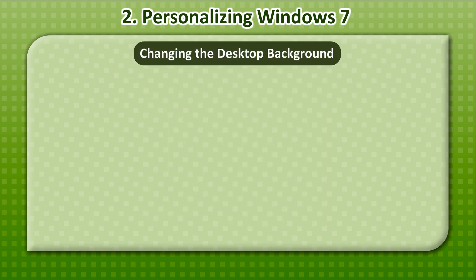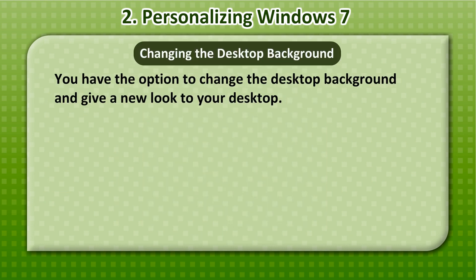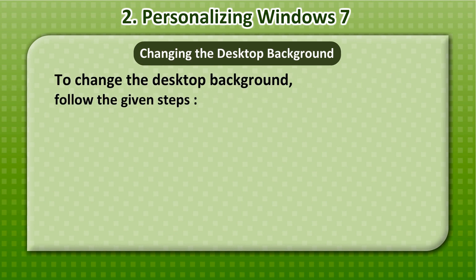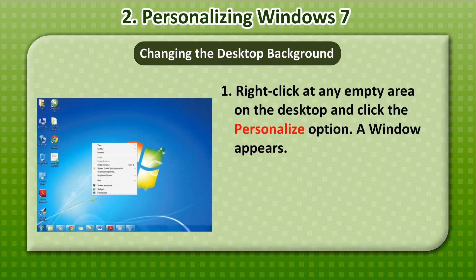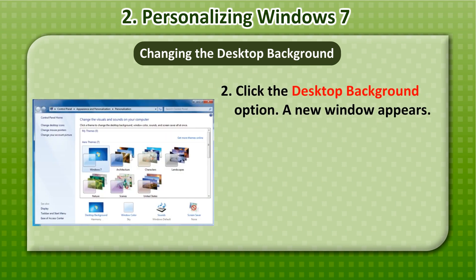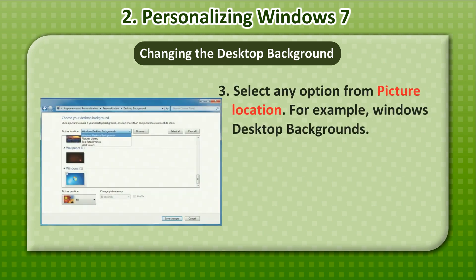Changing the desktop background: You have the option to change the desktop background and give a new look to your desktop. To change the desktop background, follow the given steps. 1. Right-click at any empty area on the desktop and click the Personalize option. A window appears. 2. Click the Desktop Background option. A new window appears.